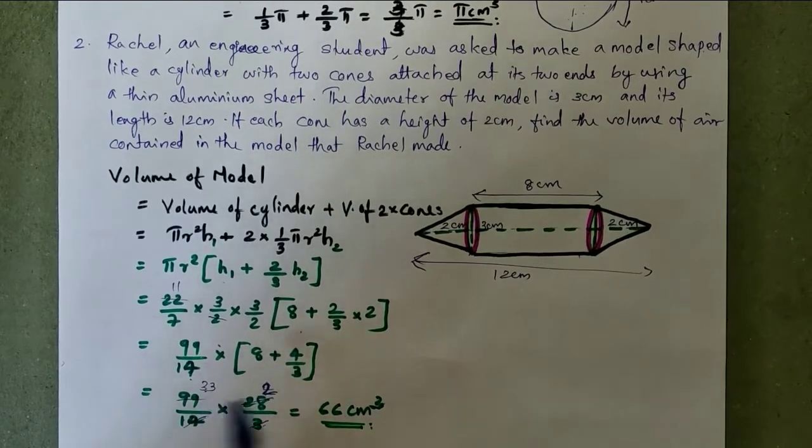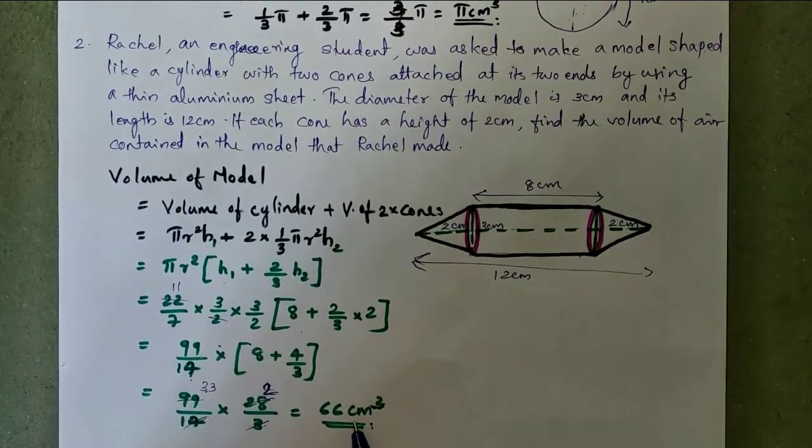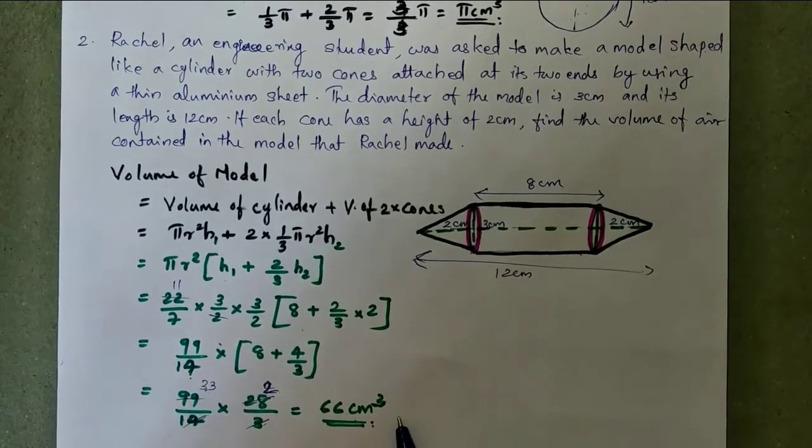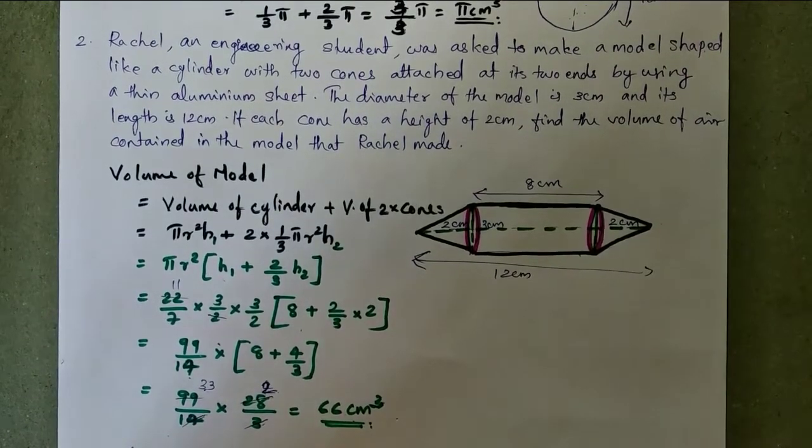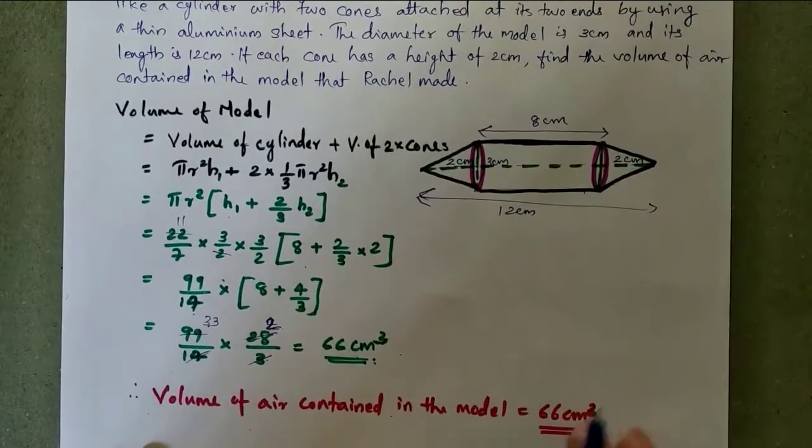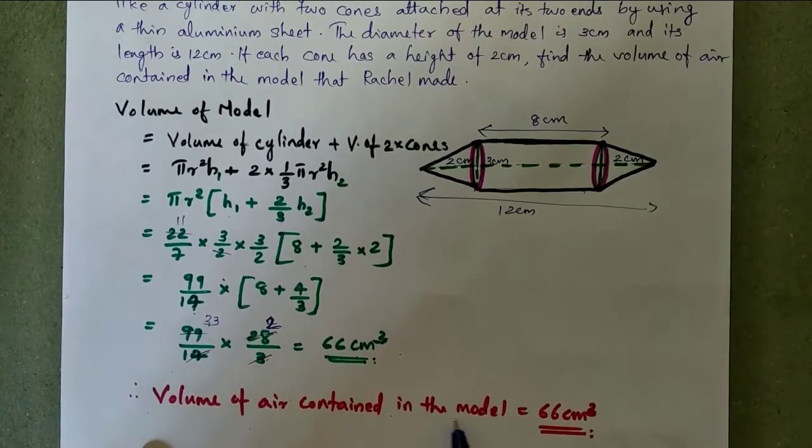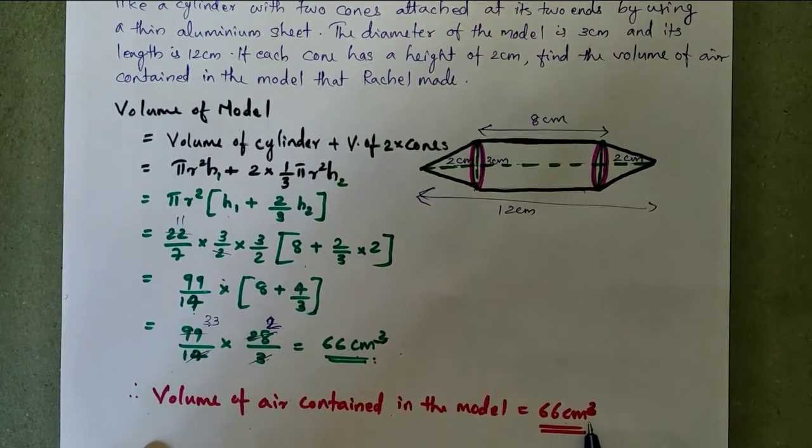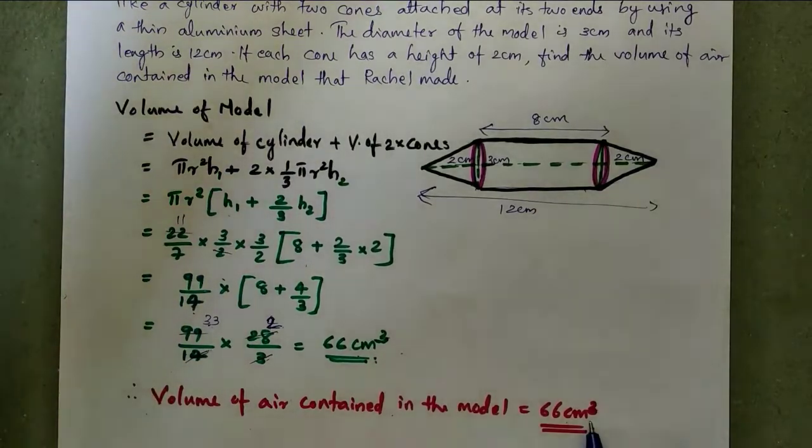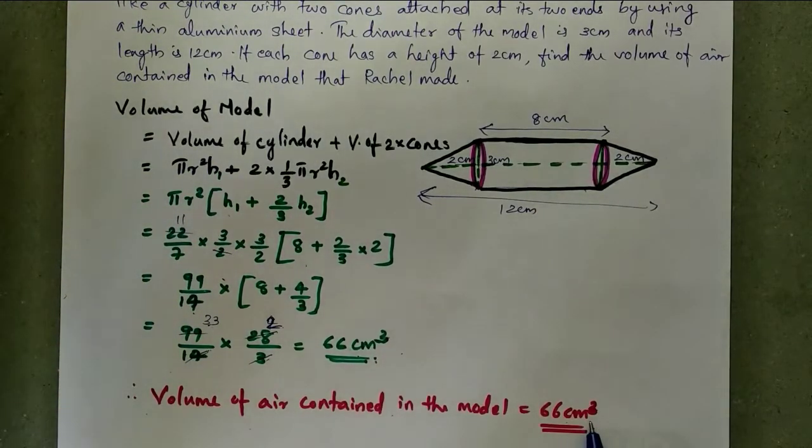And cancel 14 and 28, how many times? Two times. And 3 and 99 cancel by 3, so you will get 33, 33 into 2, 66 centimeter cube. So therefore the volume of air contained in the model is equal to 66 centimeter cube.